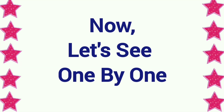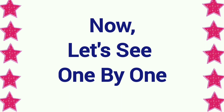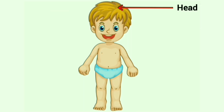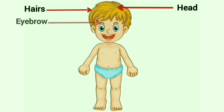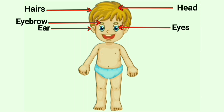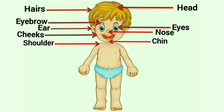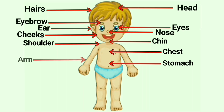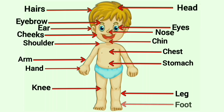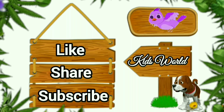Now, let's see one by one. Head. Hairs. Eyebrow. Eyes. Ear. Nose. Cheeks. Chin. Shoulder. Chest. Stomach. Arm. Hand. Knee. Foot. Toe.